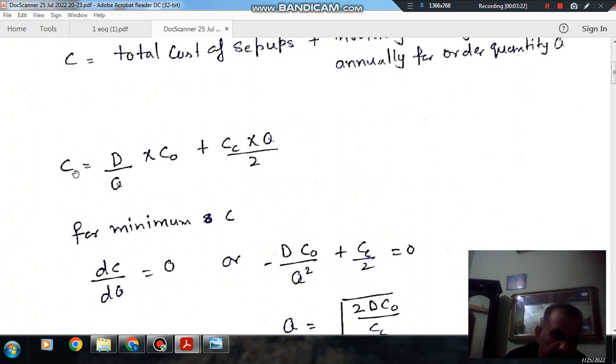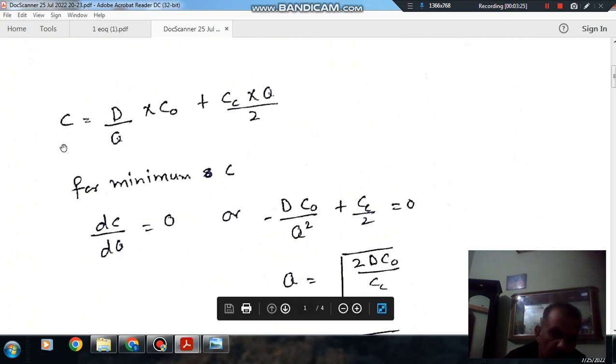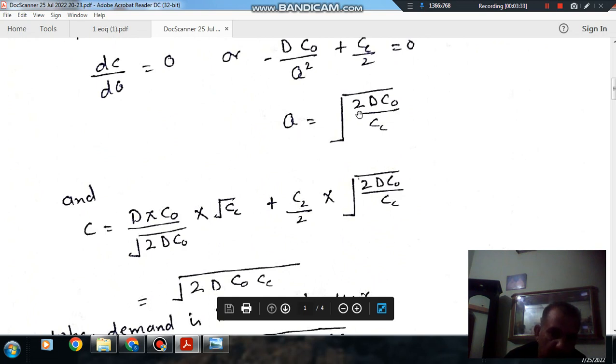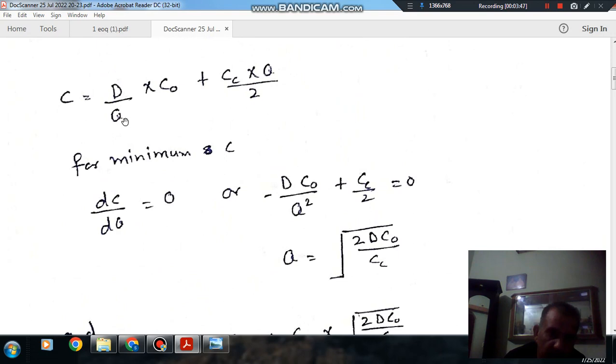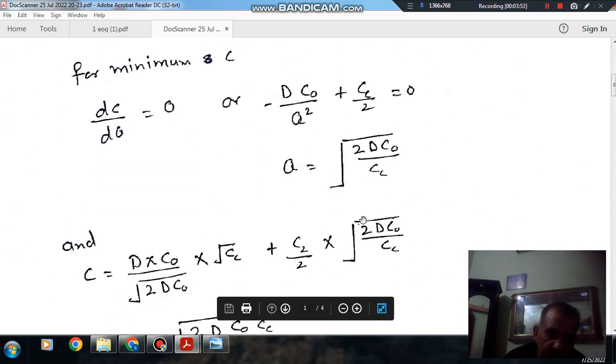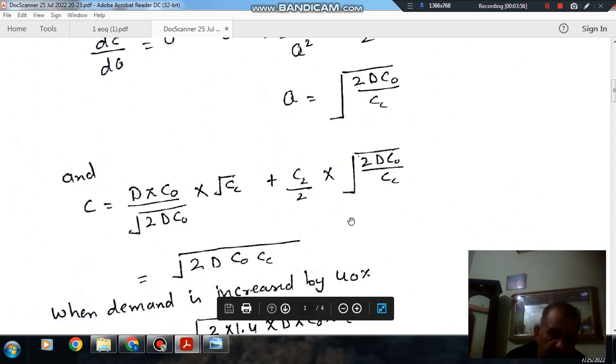Now we have to calculate C, or the minimum value of C. Now put the value of Q here and find out C. So we put the value of Q, that is the square root of 2DC0/CC. So D times C0 divided by the square root of 2DC0/CC, multiplied by the square root of 2DC0/CC.